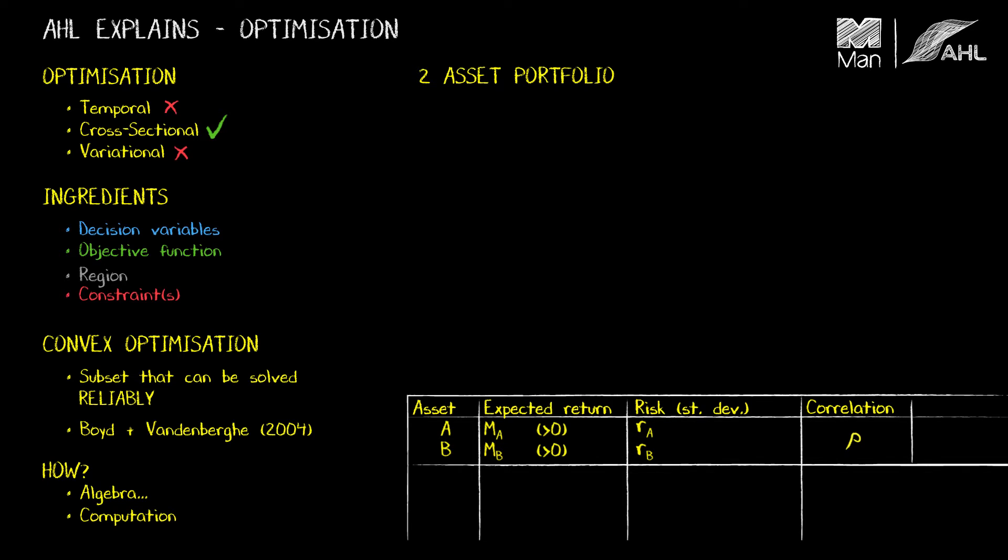Now in order to set this up as an optimization, I need to introduce decision variables and those are going to be my portfolio weights WA and WB. Now the portfolio expected return is therefore WA times MA plus WB times MB, and the portfolio risk will be the square root of this expression that involves the individual risks and their correlation.